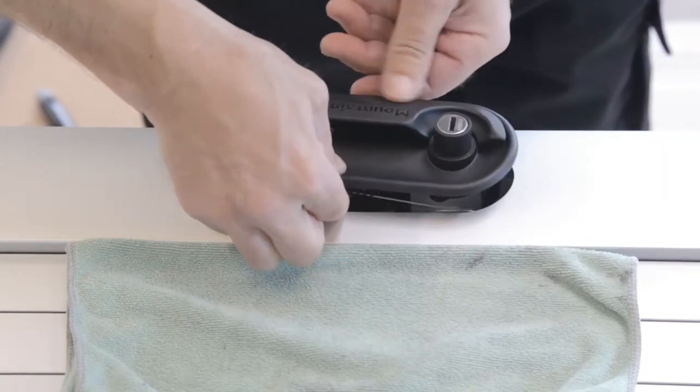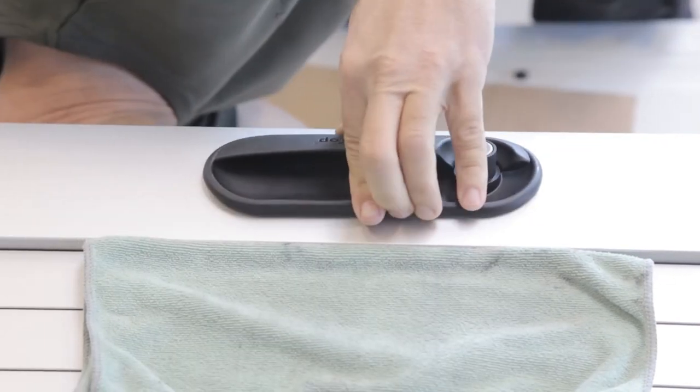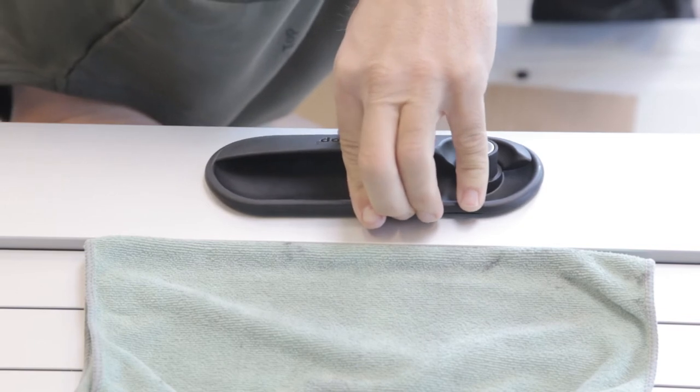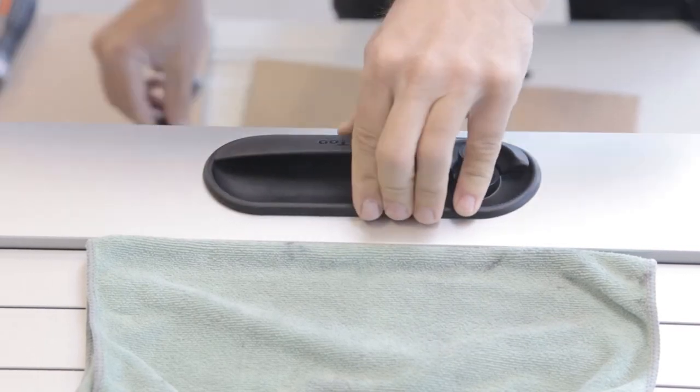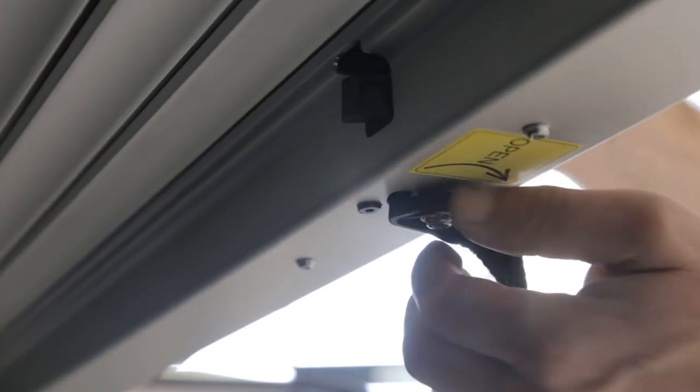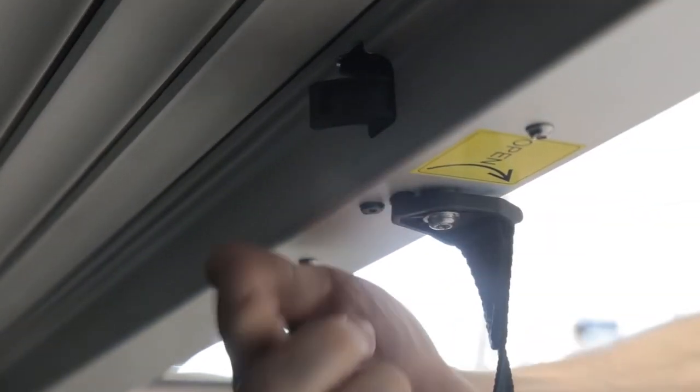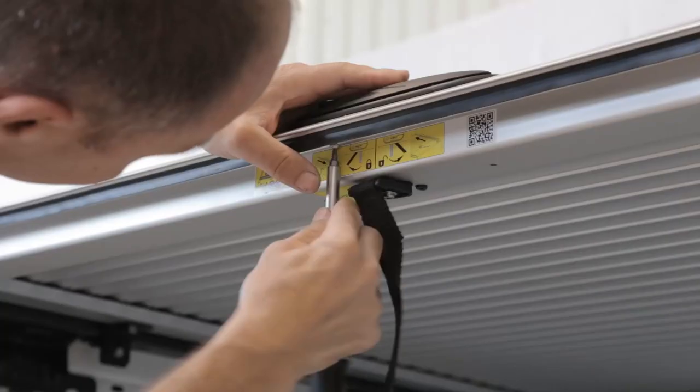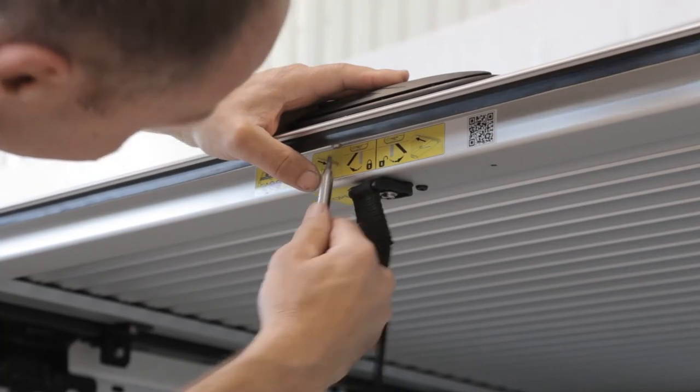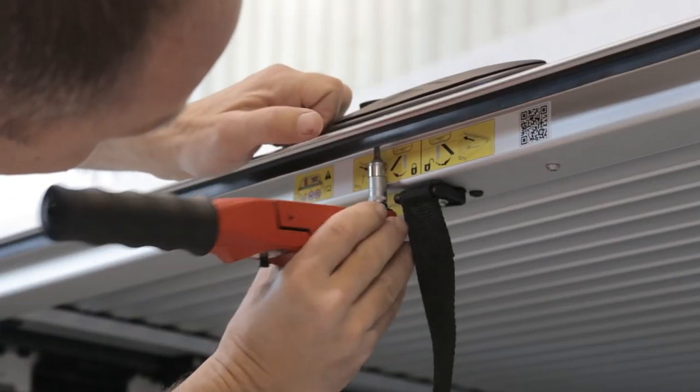Mount lock housing in its place. Check that pivots is completely in place in the bearing bore. Hold handle in place and check the function of the pull strap. Mount four screws. Torque 1.15 Nm.